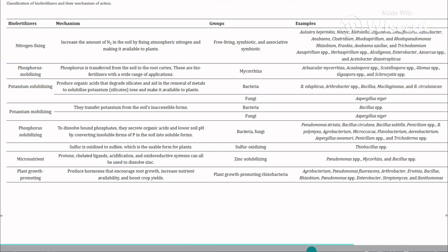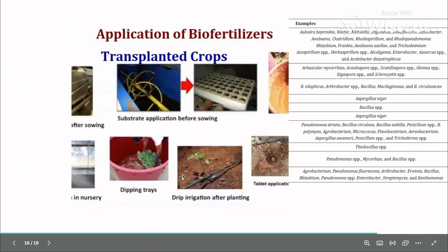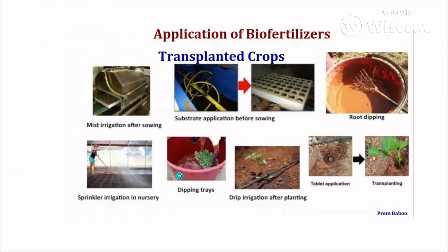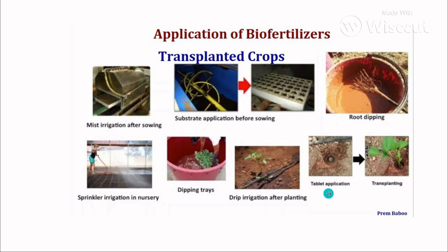My dear students, if you study this particular table, you can answer any type of question related to biofertilizers. How are biofertilizers used? Methods include mist irrigation after sowing, substrate application before sowing, mixing biofertilizers with the substrate, root dipping, sprinkler irrigation in nursery, dipping trays, drip irrigation after planting, and tablet application where you place the tablet and then place the desired plant.